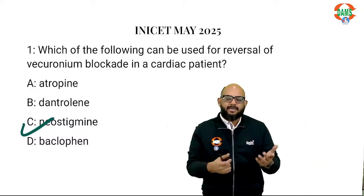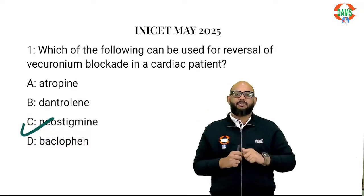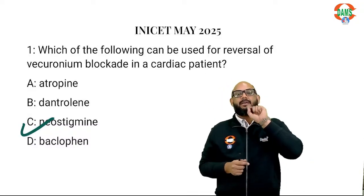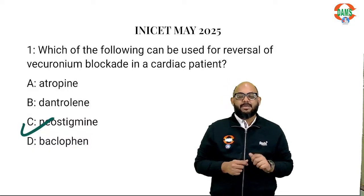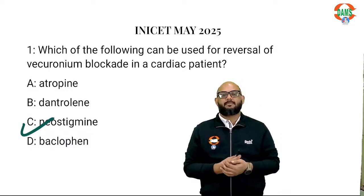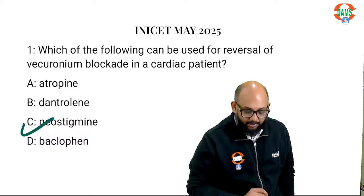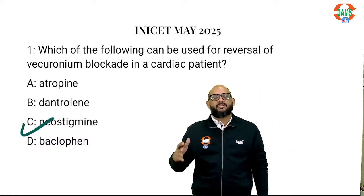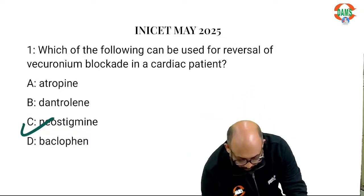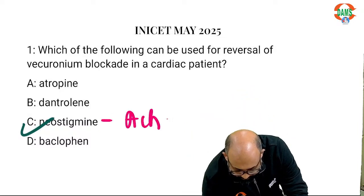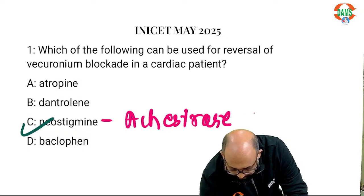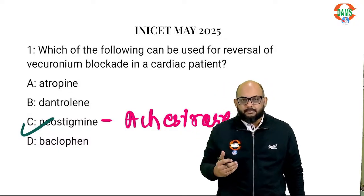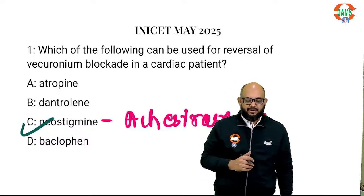So if you want reversal of a drug that is a competitive antagonist at the nicotinic acetylcholine receptor, the best way is to increase the amount of acetylcholine. We don't have acetylcholine available as an injection, but we can still increase the acetylcholine concentration at the NMJ by simply decreasing its metabolism. The metabolism is by an enzyme called acetylcholinesterase, so if you inhibit the cholinesterase, it will increase the acetylcholine concentration at the NMJ.